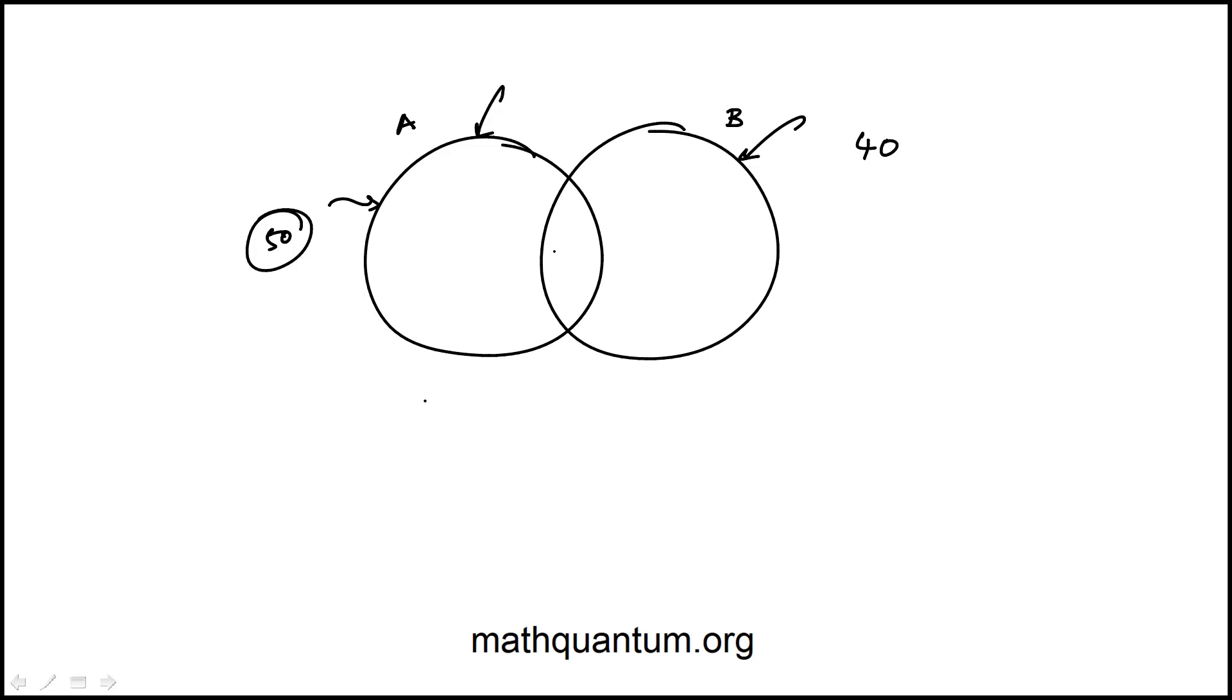Now there are 30 elements in the intersection, which means here. And the way I do these questions is to only write what belongs to that region, which means the number of elements that are in set A but not in set B, or set A only, would be 20, this region, because this entire circle is 50. And same way, elements that are only in set B would be the difference between 40 and 30, so that's 10.